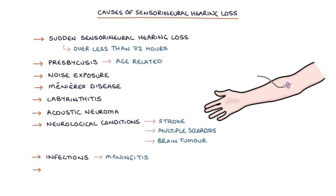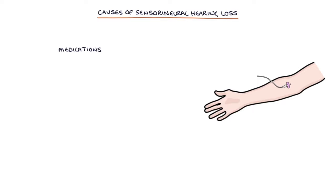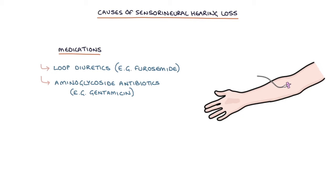Medications are also a cause. There are a large number of medications that can cause sensorineural hearing loss. Some of the more common ones worth remembering are loop diuretics, for example furosemide; aminoglycoside antibiotics, for example gentamicin; and chemotherapy drugs, for example cisplatin.